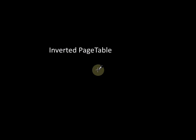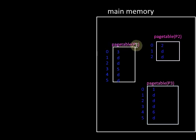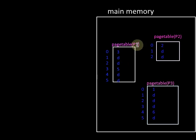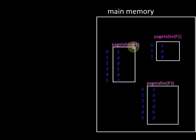Next we shall see what inverted page tables are. In a normal page table, for each process we have a separate page table, and the number of entries in the page table is equal to the number of pages of the process. To execute a process we keep the entire process or a part of it in main memory, and the page table of that process must also be kept in main memory.